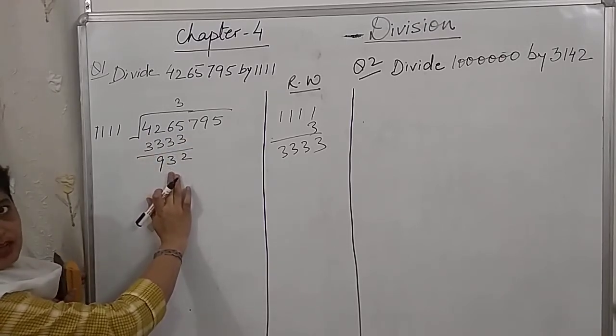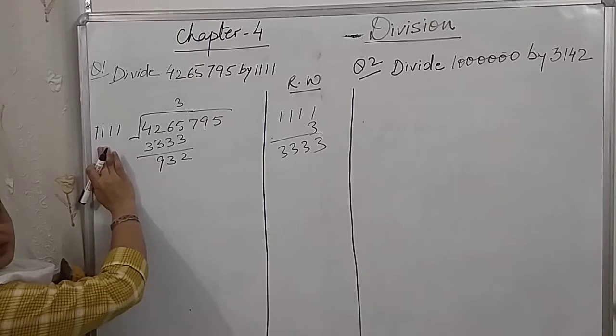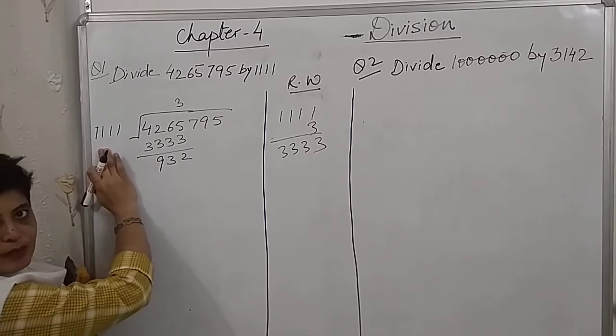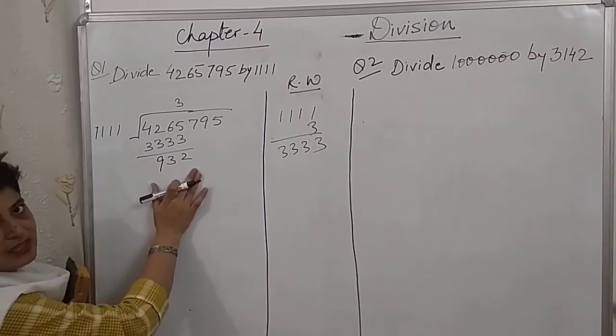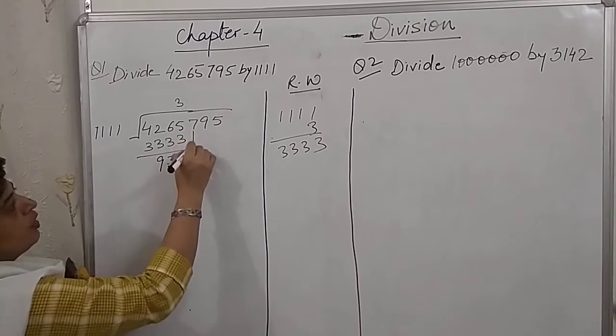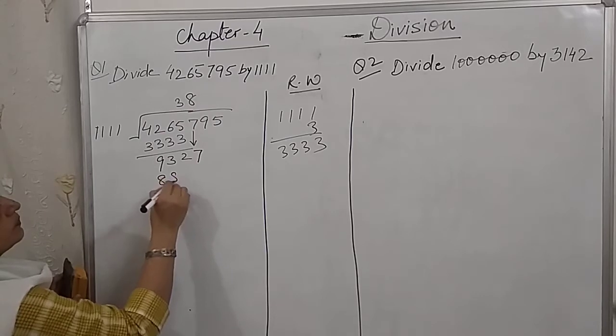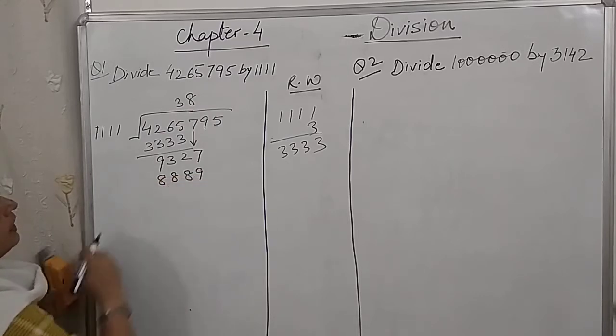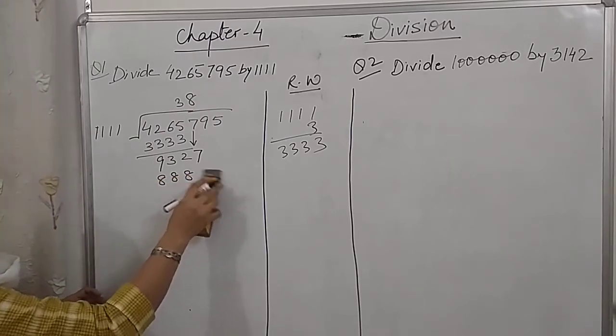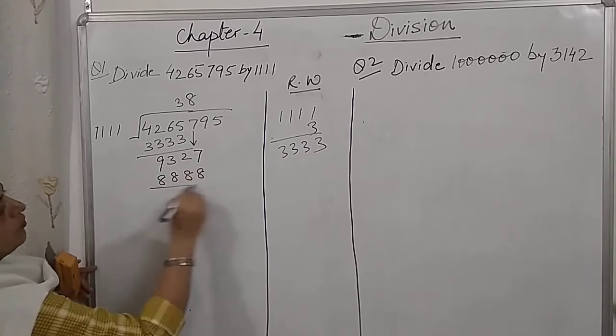Now, this remainder should always be smaller than the divisor. In every step, the remainder will be smaller than the divisor. Now we will take down this digit with 8. Because with 9, we will get 4 times 9. So it will go with 8.